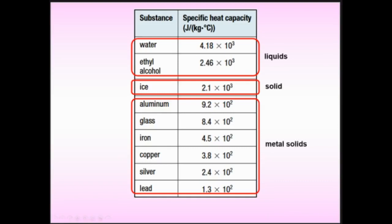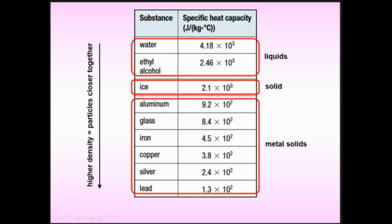What's happening to the specific heat capacity values as you go down the chart? The magnitude goes down, which means as you go down you get higher density. Higher density of solids means particles are closer together, which apparently means it's easier to heat up. So which one is easier to heat up — water or the iron kettle you're using?